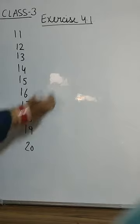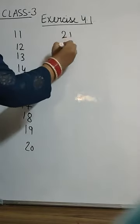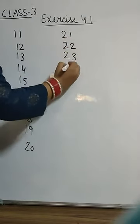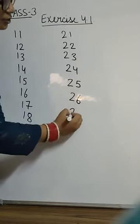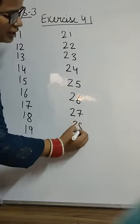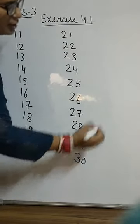19 and 20. This is 21, 22, 23, 24, 25, 26, 27, 28, 29 and this is 30.